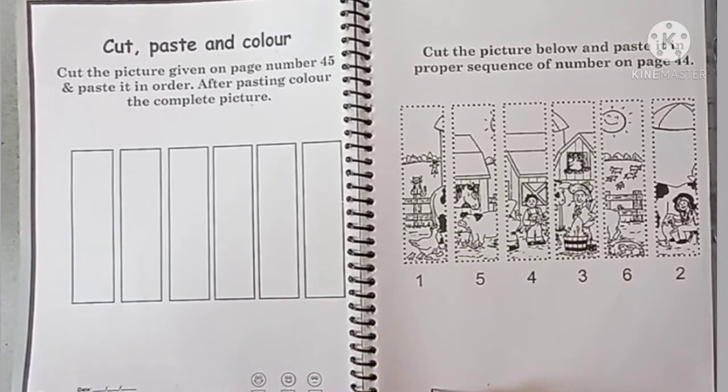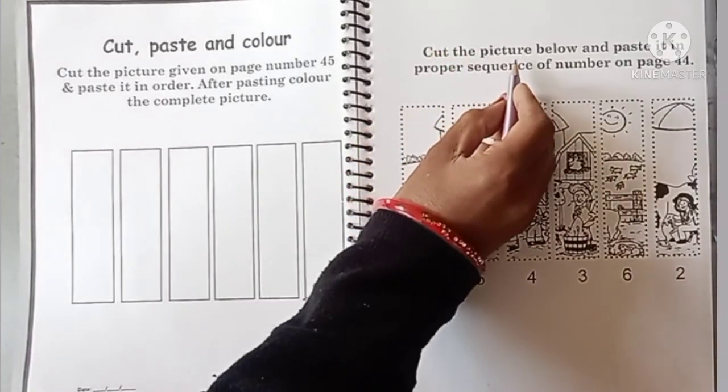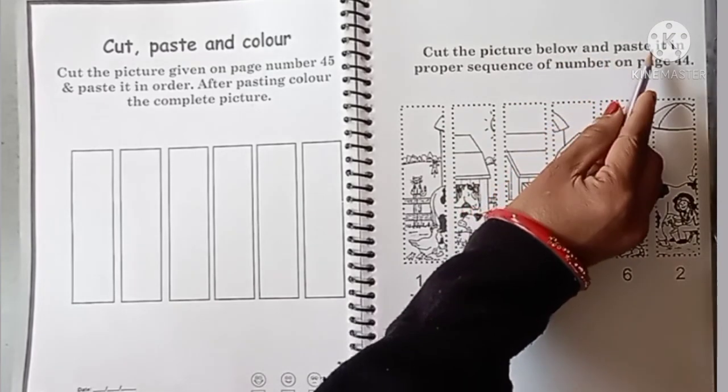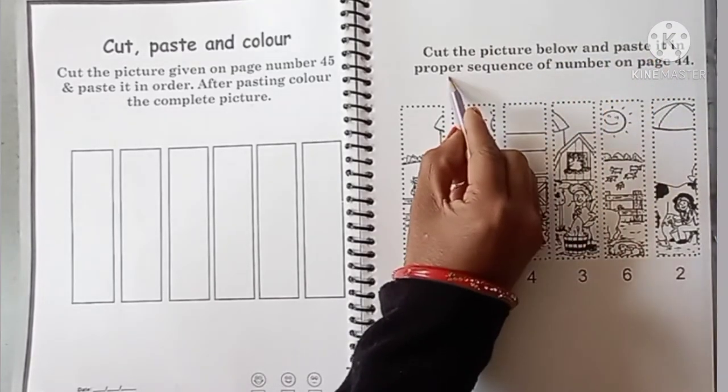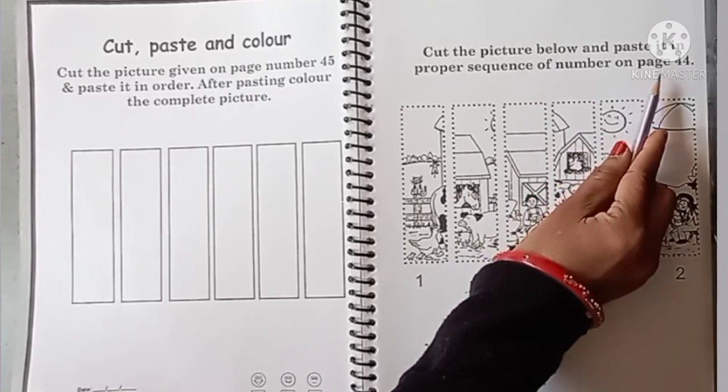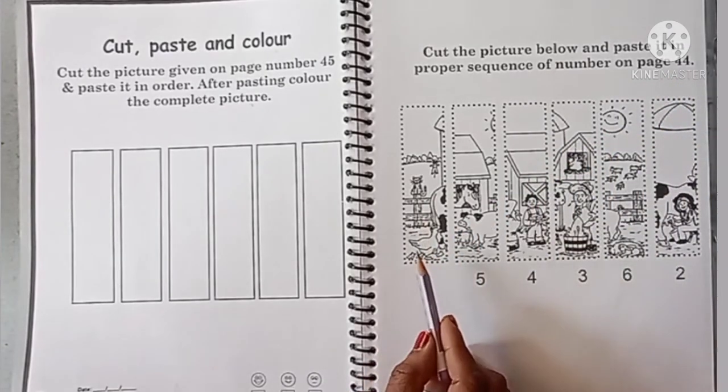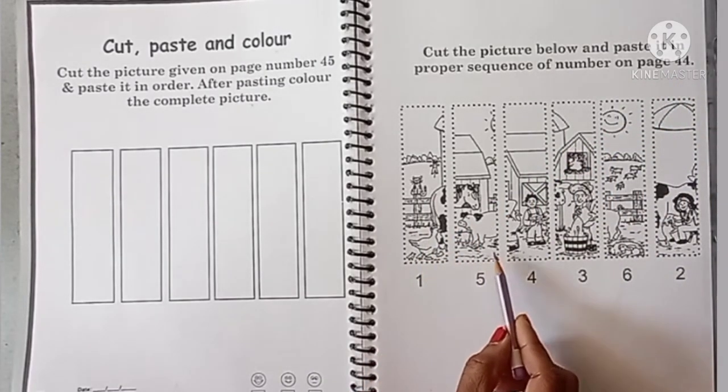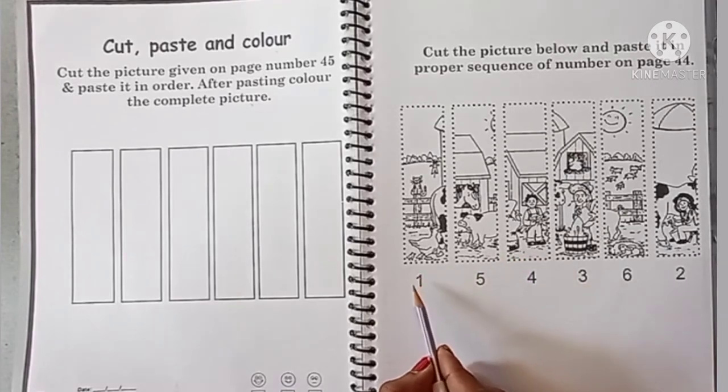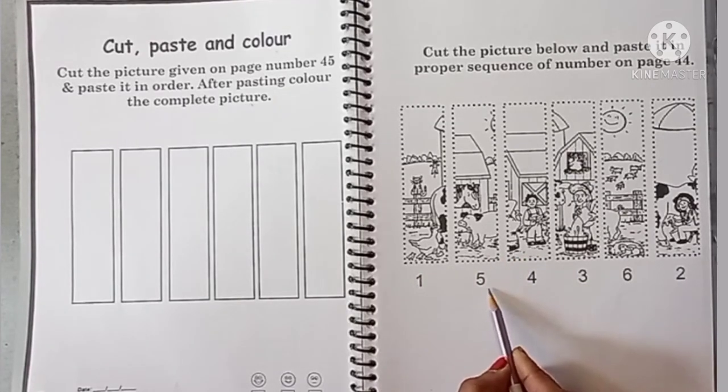On page number 45, cut the picture below and paste it in proper sequence of number on page 44. Here you can see the cutouts in the picture, number sequence 1, 5, 4, 3, 6, 2. This is in jumbled form.